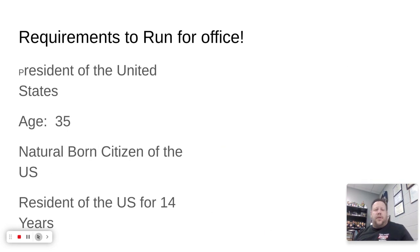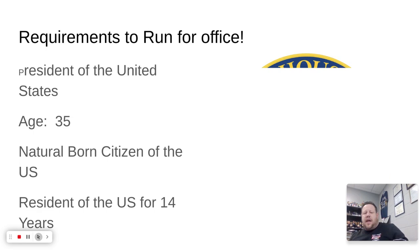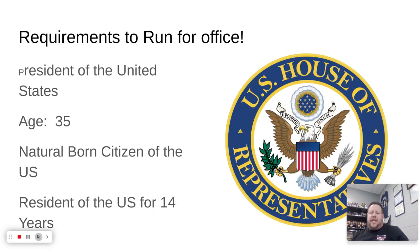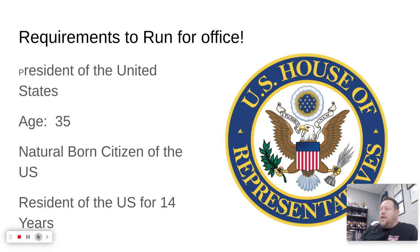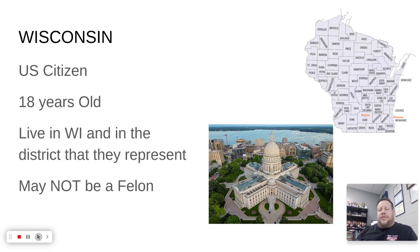For president, you must be 35 years old, a natural born citizen of the United States, and have lived in the United States for at least 14 years. So even if you were born here but lived somewhere else, you'd need to have been back in the U.S. for at least 14 years.